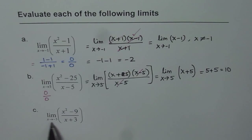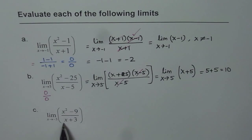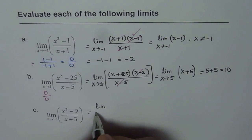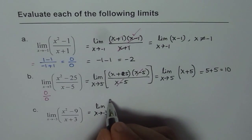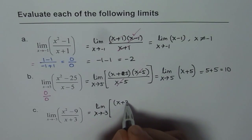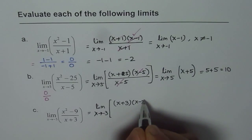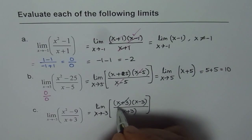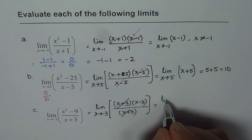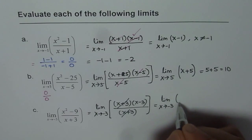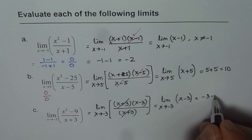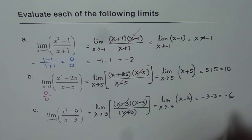The last example has x approaching minus 3. Minus 3 squared is 9, so 9 minus 9 is 0, and minus 3 plus 3 is also 0 — again the 0 over 0 form. So we factor first: we get x plus 3 times x minus 3 divided by x plus 3. The x plus 3 terms cancel, leaving the limit as x approaches minus 3 of x minus 3. Substituting minus 3 gives minus 3 minus 3, which is minus 6.